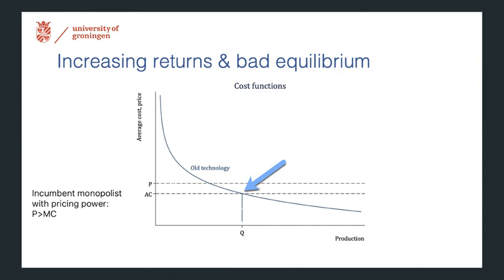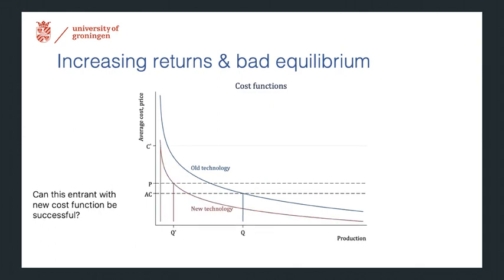And then suppose there is a potential new entrant. This potential new entrant has a much lower cost function. So at every point, the cost function of the new technology is below that of the old one.